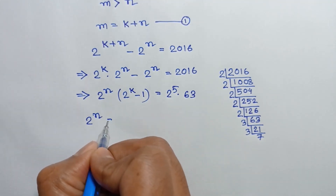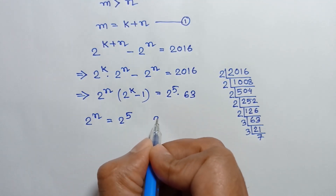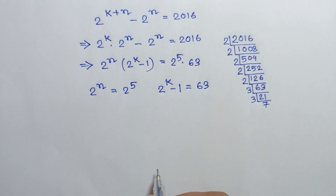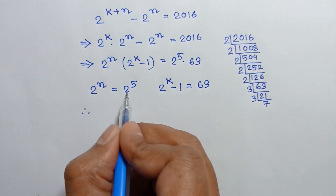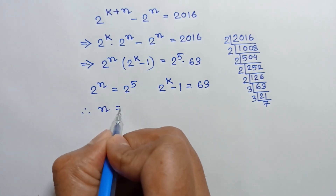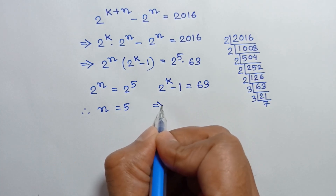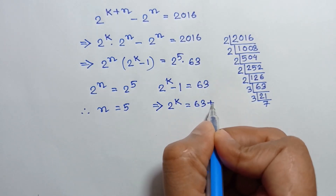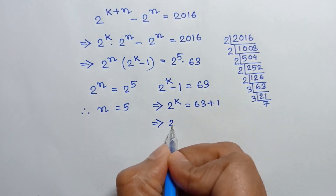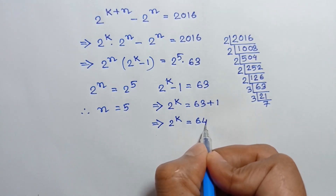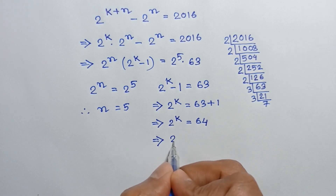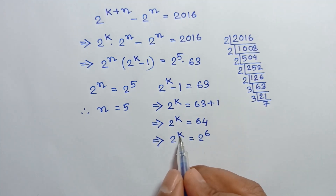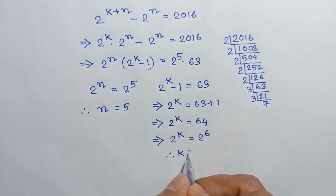So, since the bases are the same, comparing powers gives n is equal to 5. And from the other term, taking 1 to the right side, we have 2 to the power k is equal to 63 plus 1, which is 64, or 2 to the power 6. Since bases are the same, k is equal to 6.